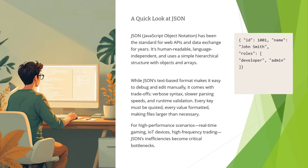We also need to understand what problems JSON has, because that's why the industry is adopting TOON. The problem with JSON is that it is inefficient for high-performance scenarios. It needs to be parsed character by character, converted from text to data structures, and validated at runtime. For web APIs this is fine, but when you need millisecond response times — for gaming, IoT devices, or thousands of messages per second — JSON starts to show its limitations. That's where TOON architecture comes into the picture.